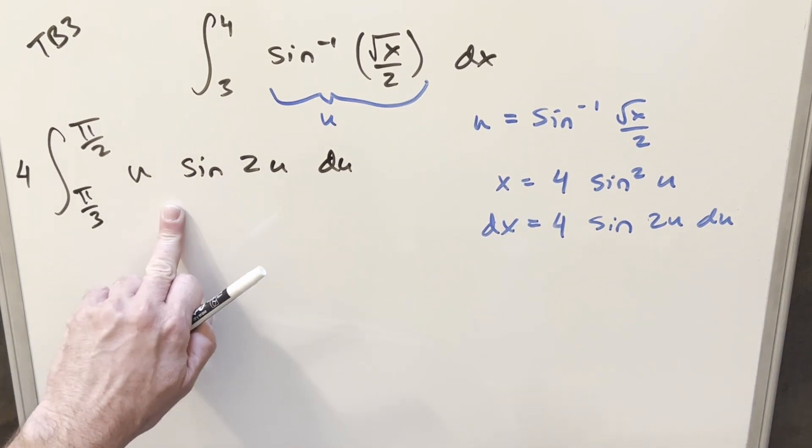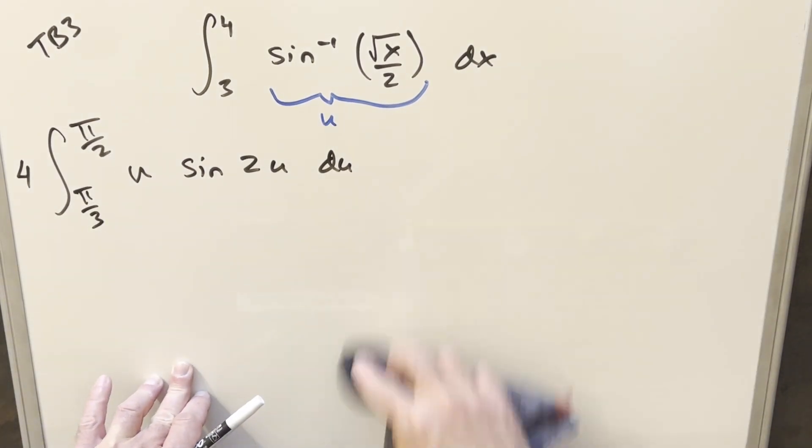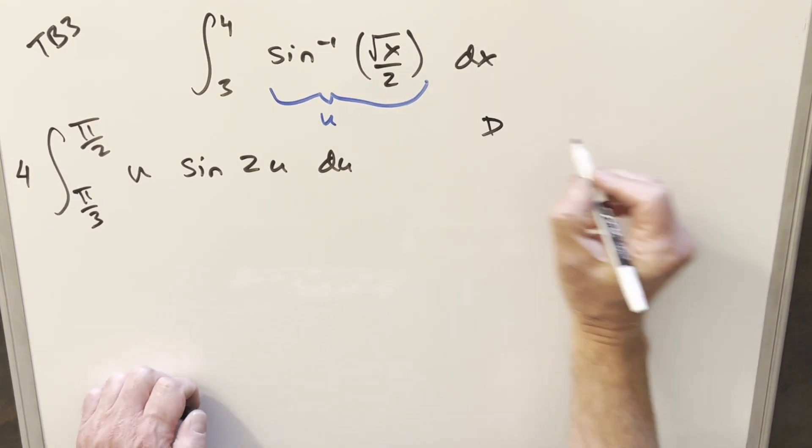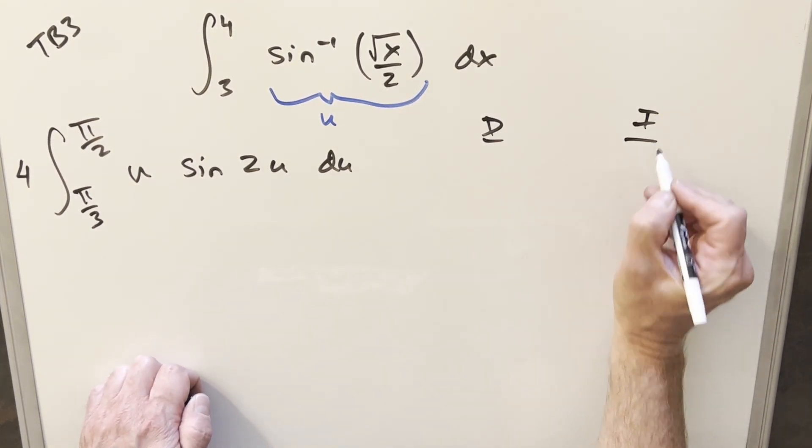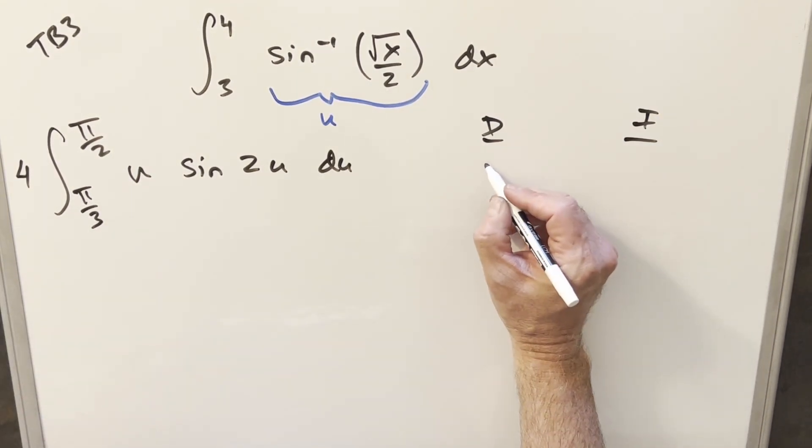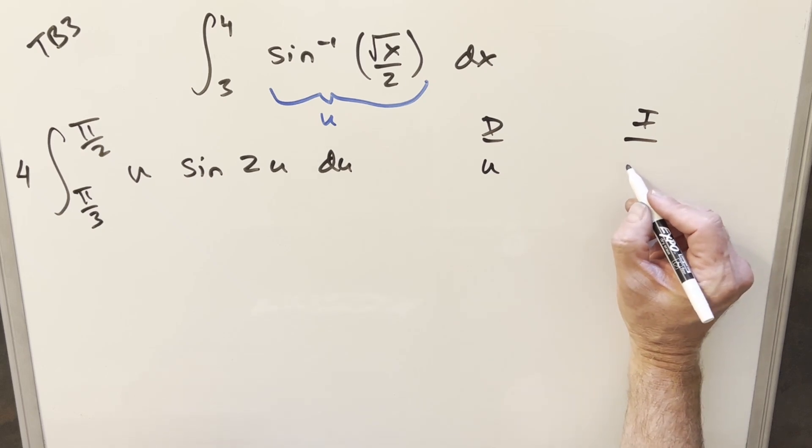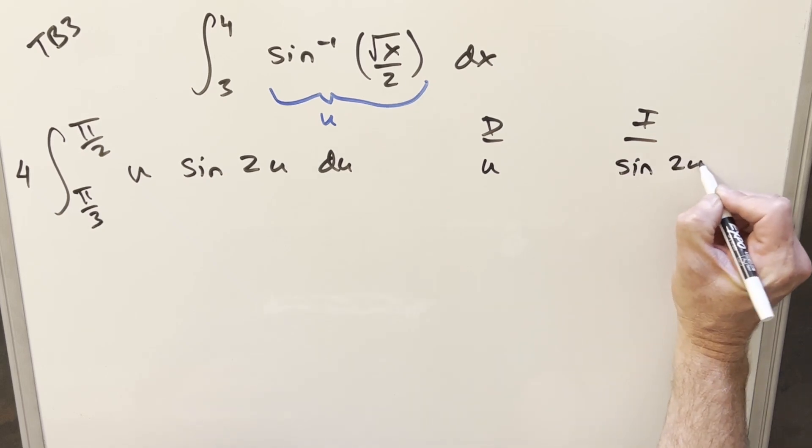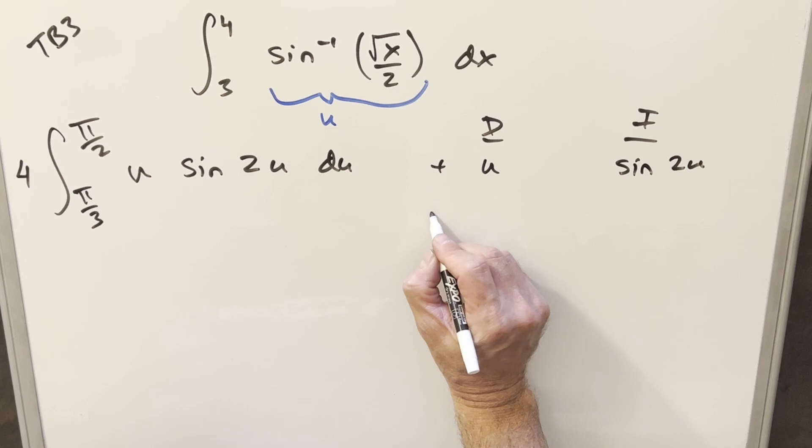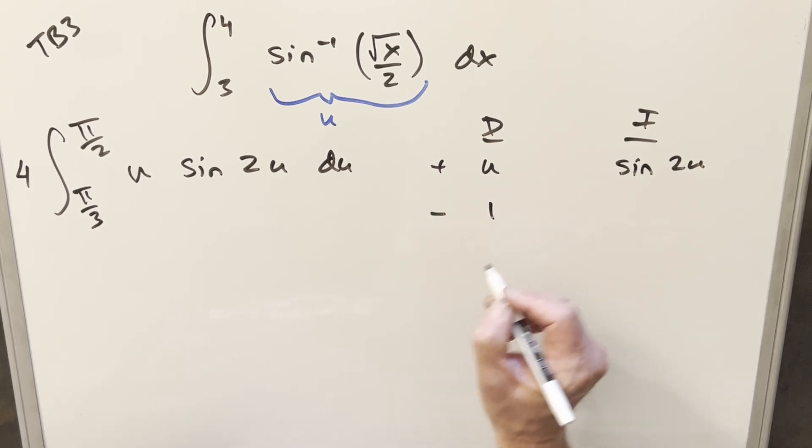But now that we have two functions, let's just do integration by parts on this using the DI method over here to the right. So we'll set up our table for the DI method. I'm going to want to differentiate this because it's going to simplify down pretty nicely. And then we'll integrate sine two u. So taking the derivative here, take the derivative once and we get one. Differentiate one and this is going to be zero.